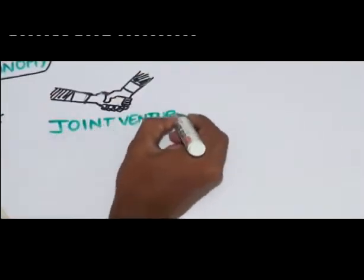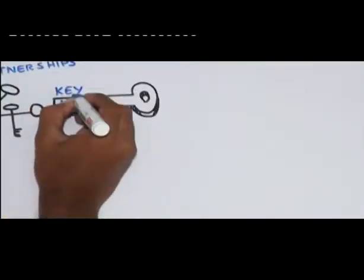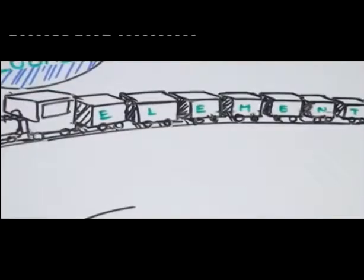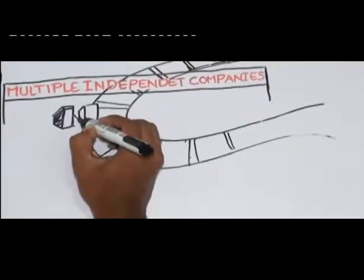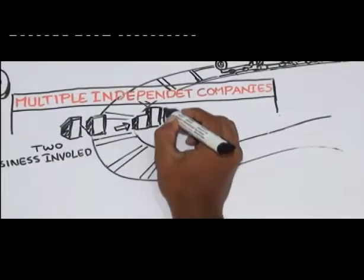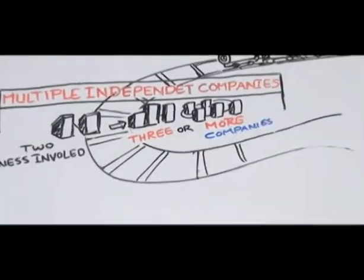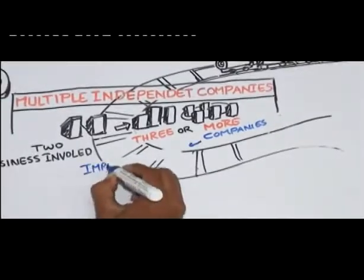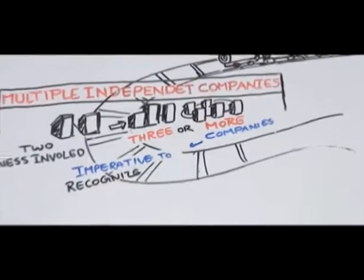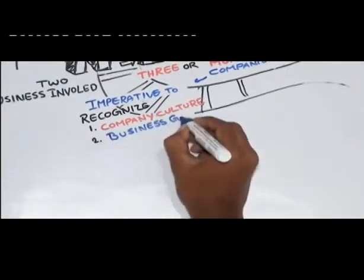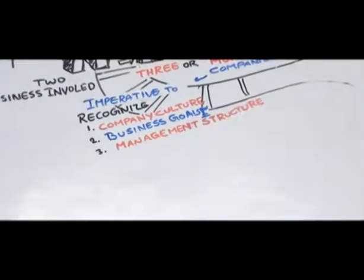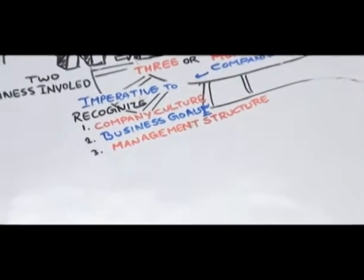Joint ventures must have four key elements. One, multiple independent companies. Most often, two businesses are involved, although ventures between three or more companies are becoming more common. It is imperative to recognize and address the differences in company cultures, business goals, management structures, and other key aspects of each organization.